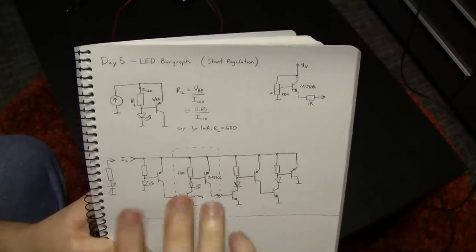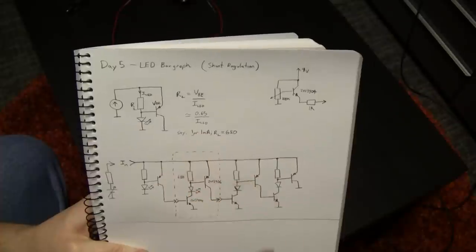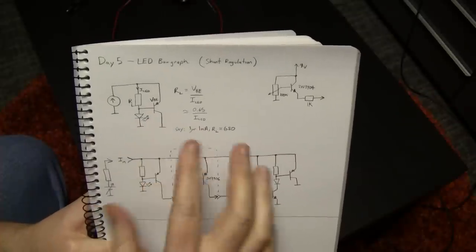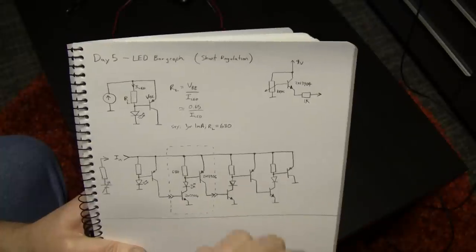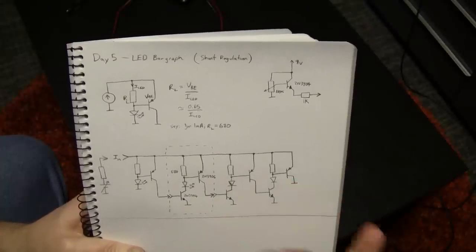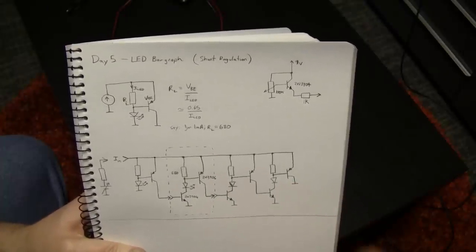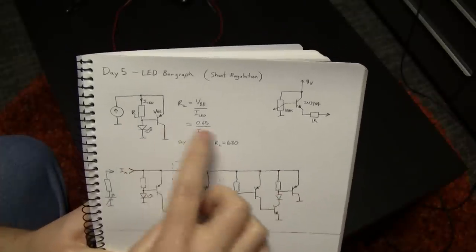But if you look up the VBE for a 2N3904 at about 1 milliamp, which is for a modern high brightness LED, a reasonable current, maybe you'd want 10 to 20 milliamps for an older tech LED. And you just do the math.